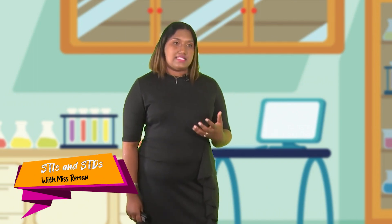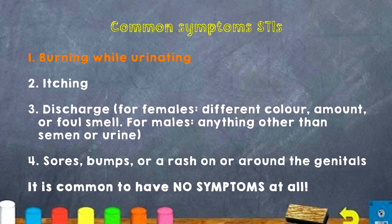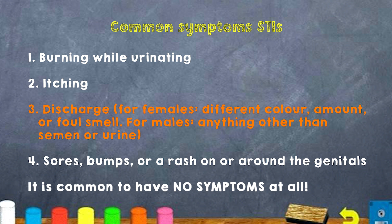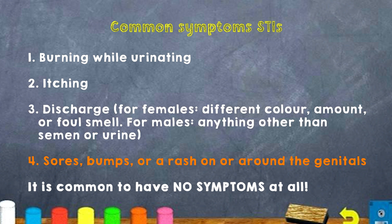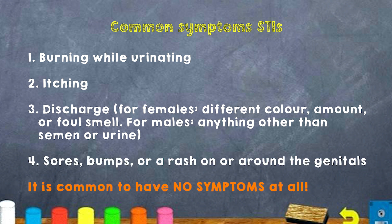What are some common symptoms of an STI? First, you will have burning while urinating. There will also be itching in the genitals. There will be discharge — for females, of different colors, amount, or maybe a foul smell; for males, anything other than semen or urine. There will also be some sores, bumps, or a rash on or around the genitals. It is also common to have no symptoms at all.